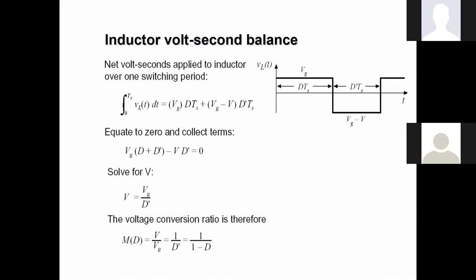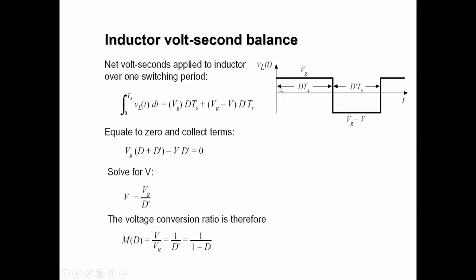Now apply the inductor volt-second balance condition. Integrating over one period: from 0 to dTs, VL = Vg; from dTs to Ts, VL = Vg − V. Setting the average equal to zero and solving for V, we get V = Vg / d′, or equivalently V = Vg / (1 − d), where V is the output voltage, Vg is the input voltage, and d′ = 1 − d is the complement of the duty cycle.